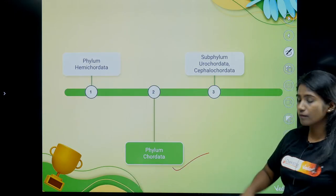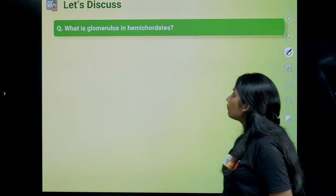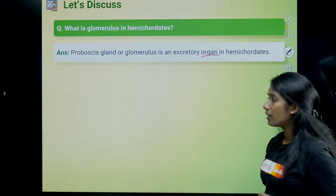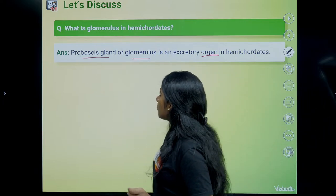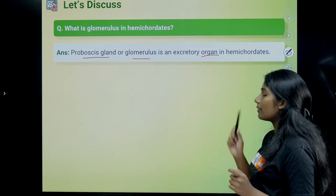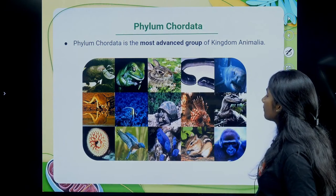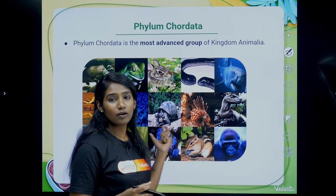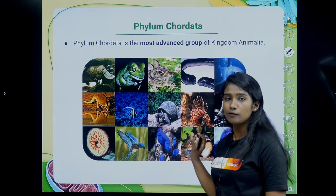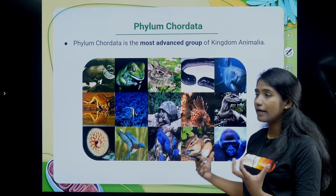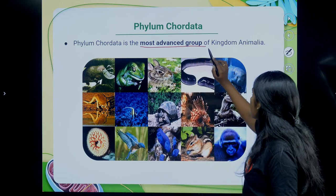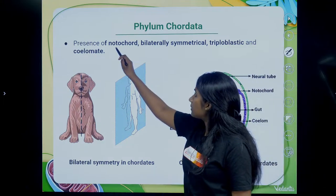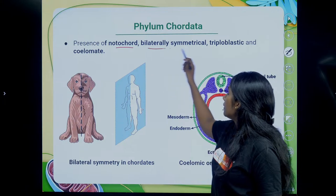Now we move on to Phylum Chordata. Animals with a backbone mostly fall under this phylum — those we see in day-to-day life. Phylum Chordata is the most advanced group of Kingdom Animalia. They have notochord, bilateral body symmetry — when a plane passes through the center, it divides the body into two equal identical halves — and they are triploblastic.